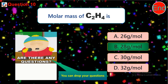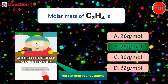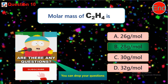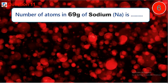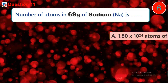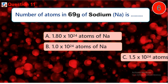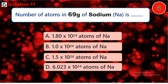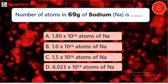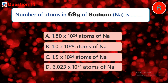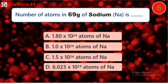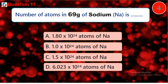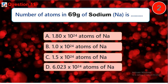Please like this video, subscribe to this channel, and click the bell button — it is totally free. Do not forget to drop your comment in the comment section. Thank you. Question 11: Number of atoms in 69 grams of sodium is dash. A) 1.8 × 10²⁴, B) 1.5 × 10²⁴.